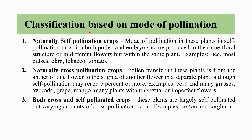Another classification is based on mode of pollination, which includes self-pollinated crops, cross-pollinated crops, and both self- and cross-pollinated crops. In self-pollinated crops, the pollen and the embryos are produced in the same floral structure, or it can occur in different flowers but within the same plant. In cross-pollinated crops, pollen transfer occurs from the anther of one flower to the stigma of another flower on a separate plant.